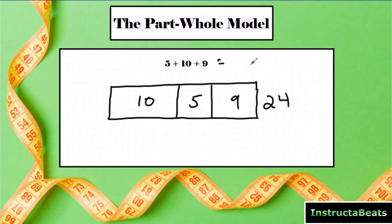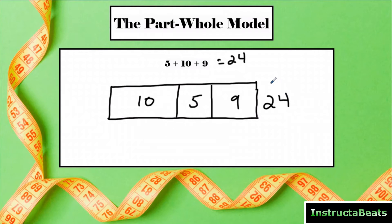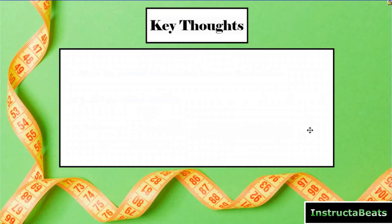A part-whole model isn't going to help you solve the arithmetic — you still need a strategy for adding, whether that's the standard algorithm or counting on fingers. What it does is show the relationship between numbers, making the transition to word problems easier. For younger students, you could give them actual M&Ms — 10 in one box, 5 in another, 9 in another — so they're using the tape diagram in a concrete, hands-on way.